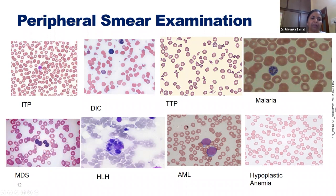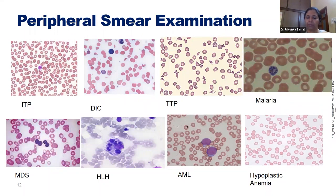In TTP, the number of schistocytes is very important for monitoring treatment response. Malaria can have a broad manifestation of hematological problems. MDS shows dysplastic features in the myeloid series. In HLH (hemophagocytic lymphohistiocytosis), some patients show active hemophagocytosis in the peripheral blood, and macrophage activity is very much elevated in the marrow. In AML, ALL, or lymphomas involving the bone marrow, atypical cells may be found in the peripheral blood with virtually no platelets.